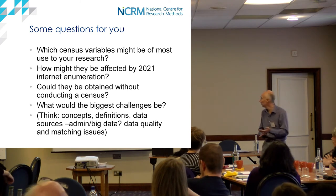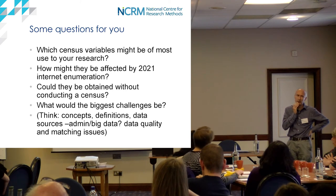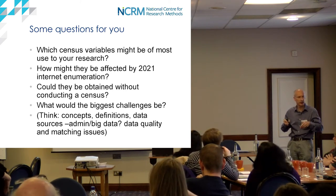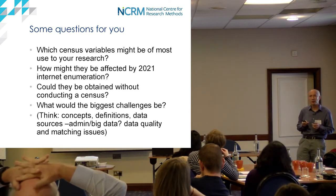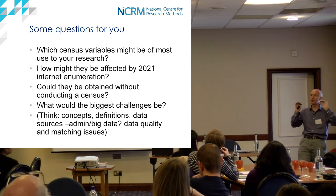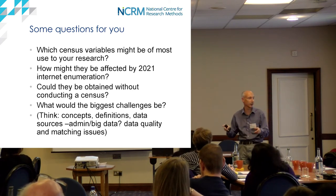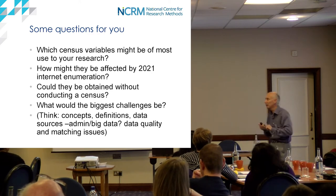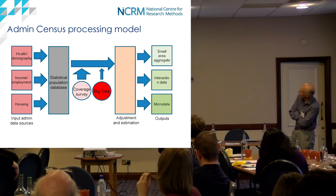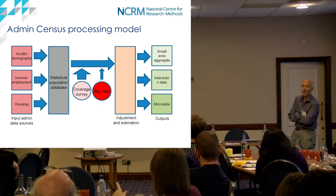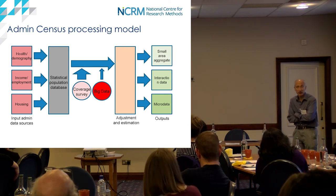Several admin sources come in and provide variables - income quite possibly, maybe replacing some questions like number of rooms in the dwelling, which we might get from the admin source - feeding into the census database, so it becomes the beginnings of a statistical population dataset rather than what you got off your forms. The coverage survey is still needed - the 2011 census coverage survey is still by far the largest household survey conducted in the decade, around 300,000 addresses stratified across all local authorities.